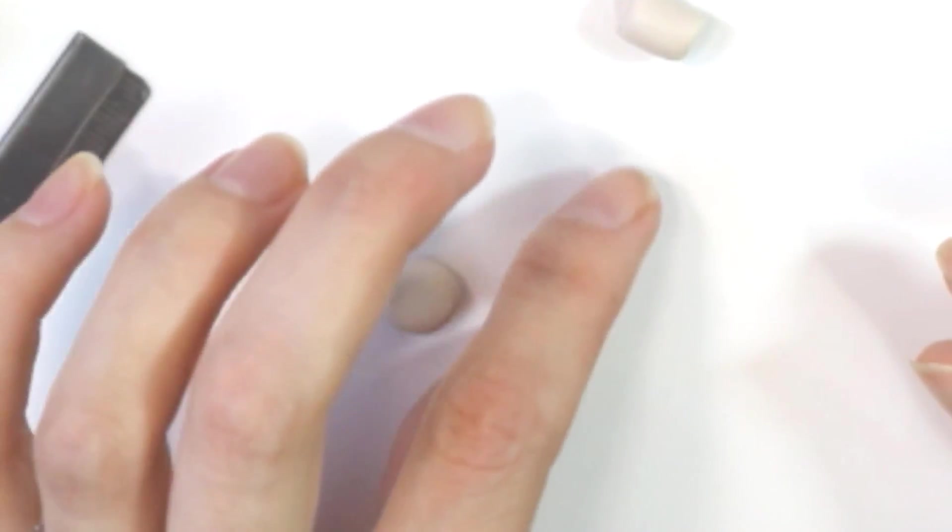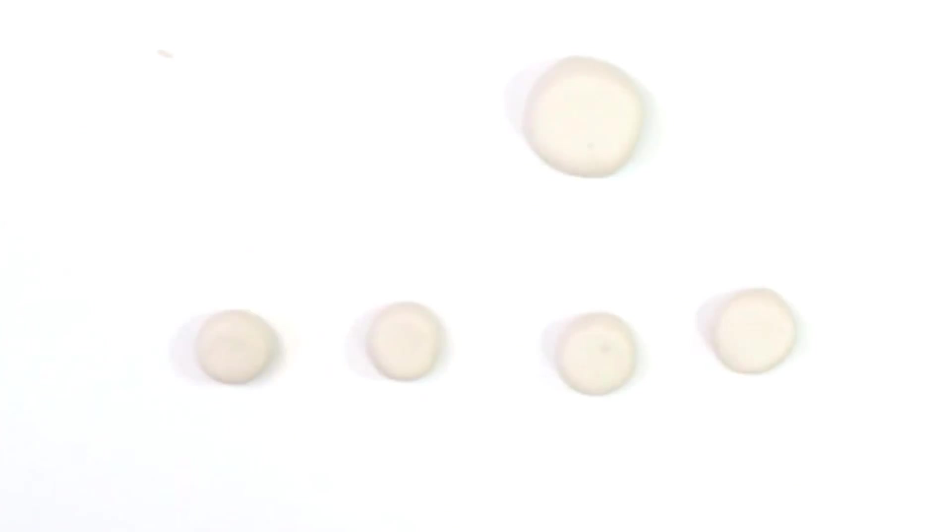Then we're going to make them into little circles and flatten them on our work surface. I'm using a tile for this, so you'll see me rolling the little ball and flattening it.